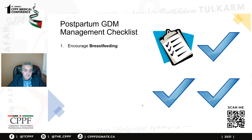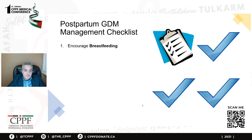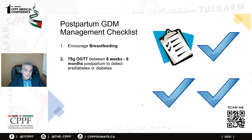Postpartum checklist for gestational diabetes: encourage breastfeeding, perform a 75g glucose tolerance test at six weeks postpartum, and discuss the increased risk of developing type 2 diabetes.